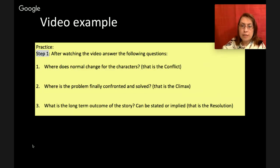So now we're going to watch a short video, and then after we get done watching the video, I want you to answer these questions. Where does normal change for the characters? That's the conflict. Where is the problem finally confronted and solved? That's the climax. And what is the long-term outcome of the story? It can be stated or implied, so they may not turn to us in the video or in the book and turn to the reader and say, and here's what we learned. But we can figure it out, put the pieces together, as they say. All right, let's watch our video, and we are going to complete a plot diagram on the video.